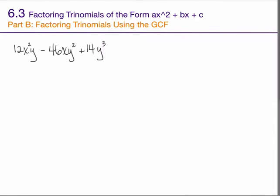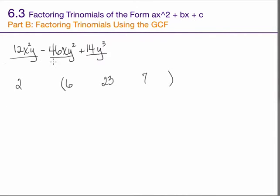Here's one we can really sink our teeth into. What do these three terms have in common? Let's take one piece at a time. What number is a factor common to 12, 46, and 14? It turns out it's only 2. What's left over when I divide out a 2 is 6, 23, and 7. Since 7 and 23 are both prime, these three numbers have nothing left in common — 2 is the greatest common factor for the numeric part.